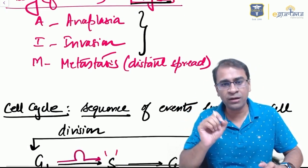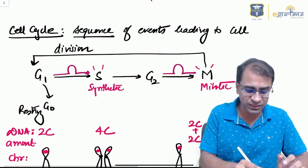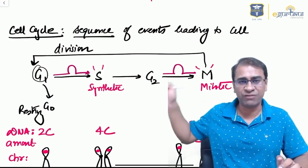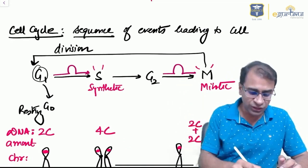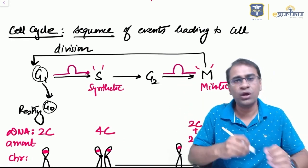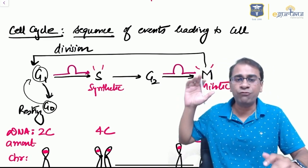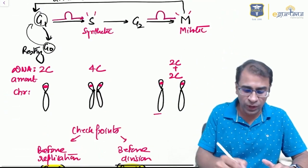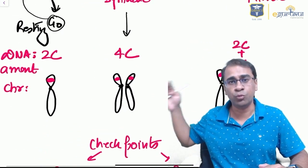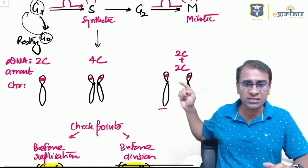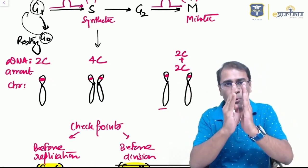Moving on to cell cycle. First understand the sequence: G0, then G1, then S, then G2, and M. G1 can go to resting phase G0 and return back to G1 if required. At S phase, the chromatid arms duplicate. At M phase, the two chromatid arms separate, hence M is called mitotic phase.